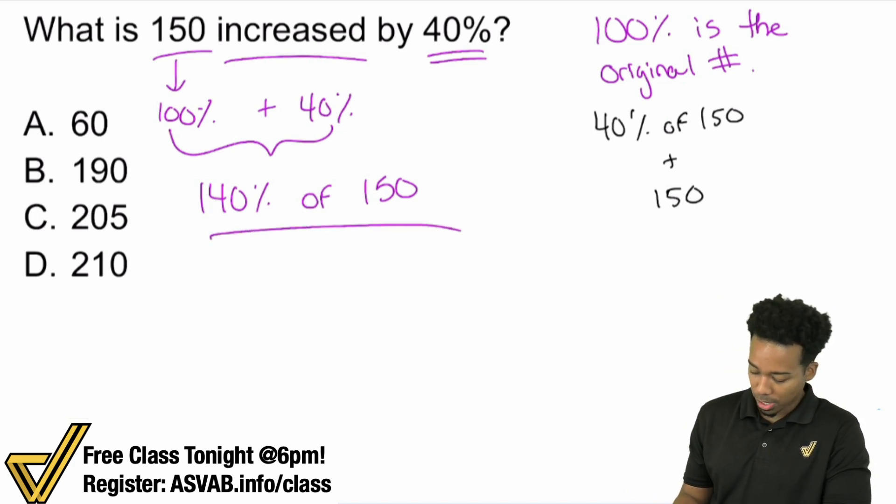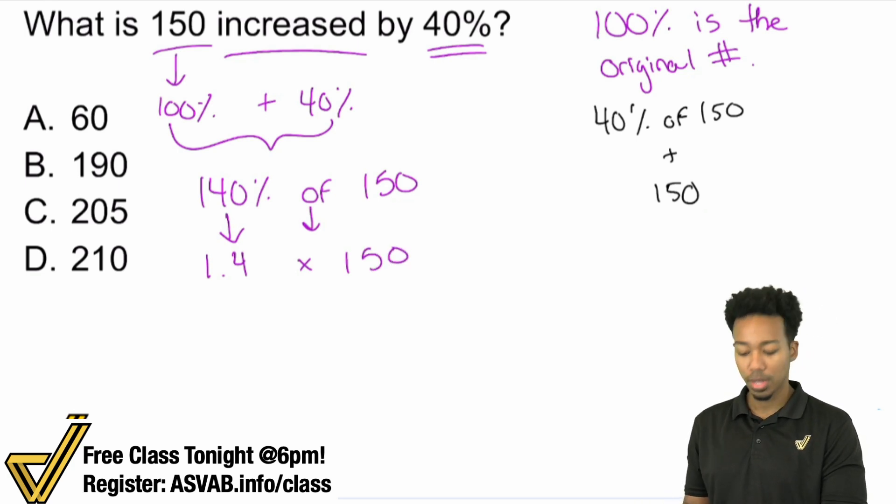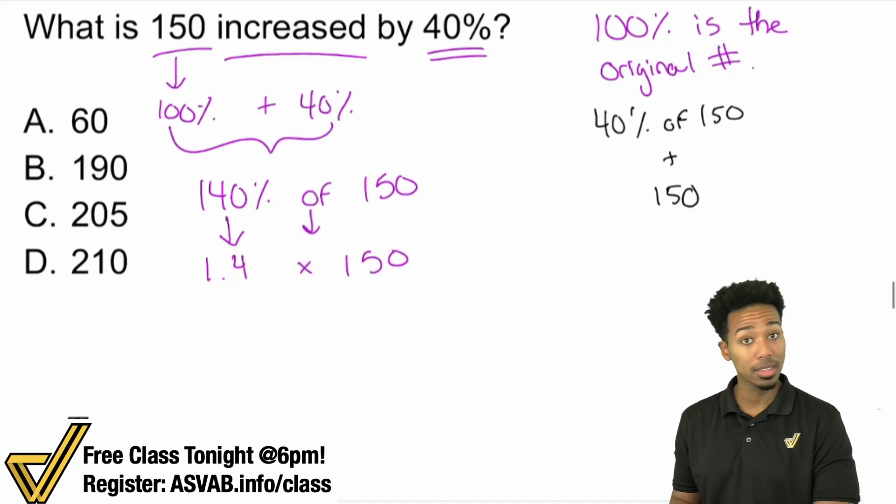Over here, 140% of 150. As a reminder, whenever you're taking a percentage, you have to turn that percent into a decimal. So this 140% turns into 1.4. And then you're going to say that of is going to turn into times, and that'll be 150. For those of you that understand percents and mental math, this is a little trick that you can use as well to give yourself an even easier time. Notice that we have a decimal here. I don't want to deal with decimals. So what I can do is this.